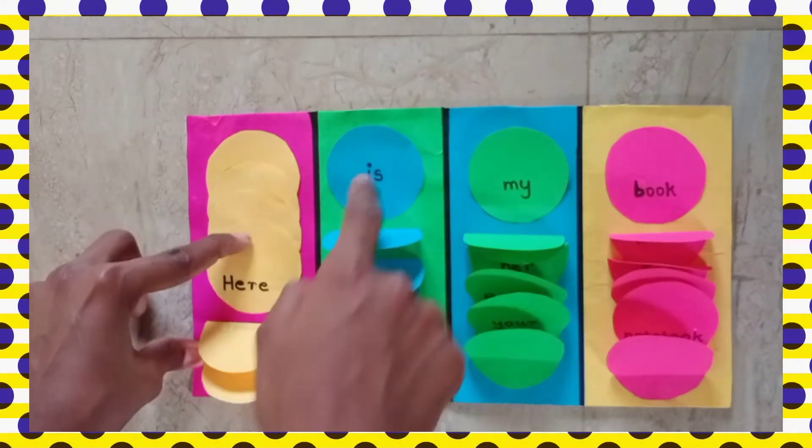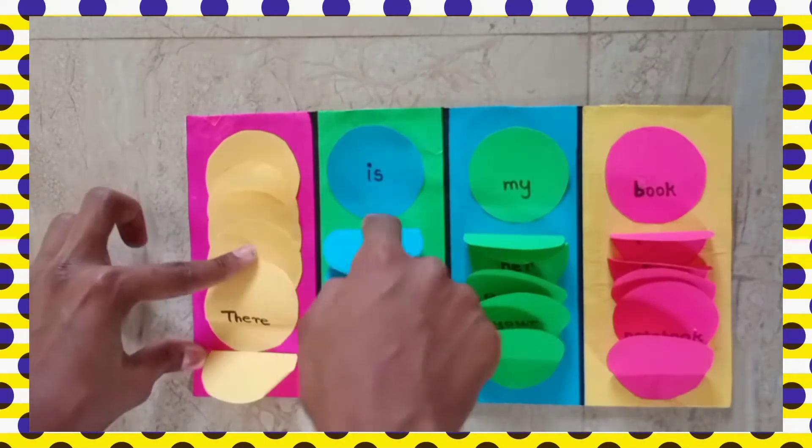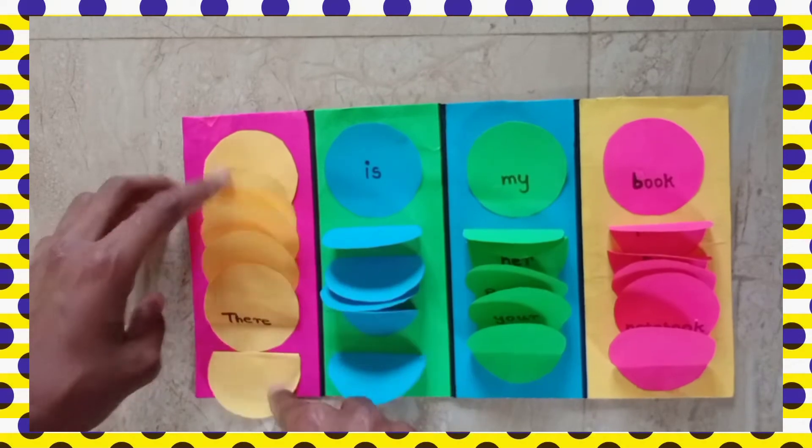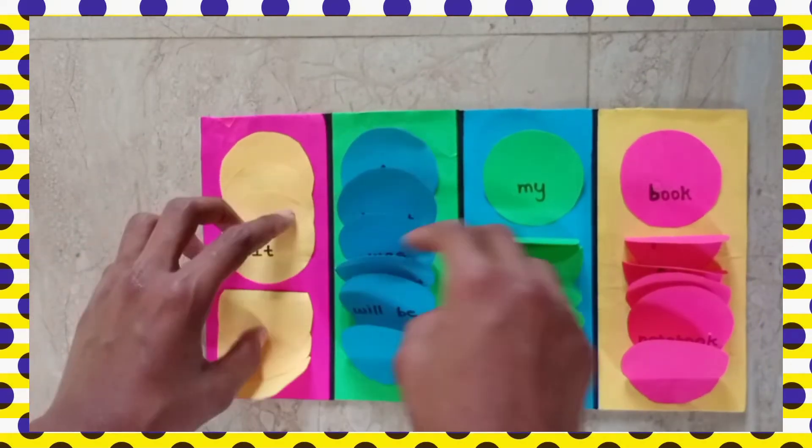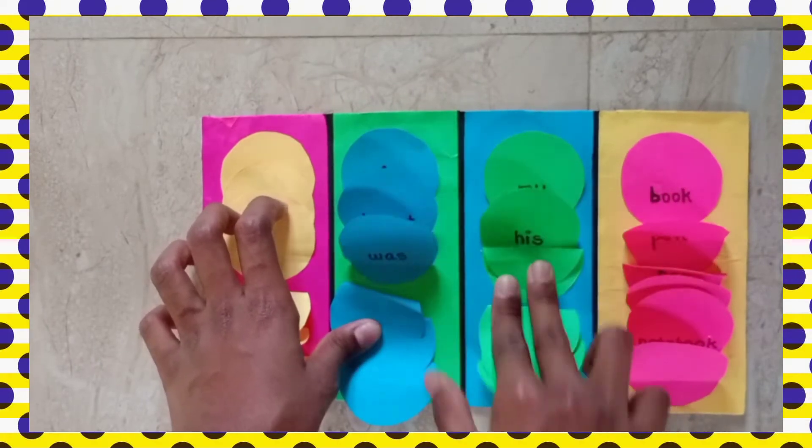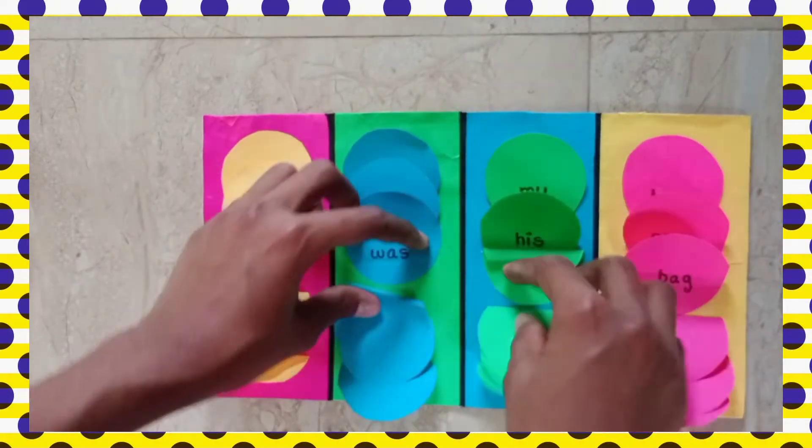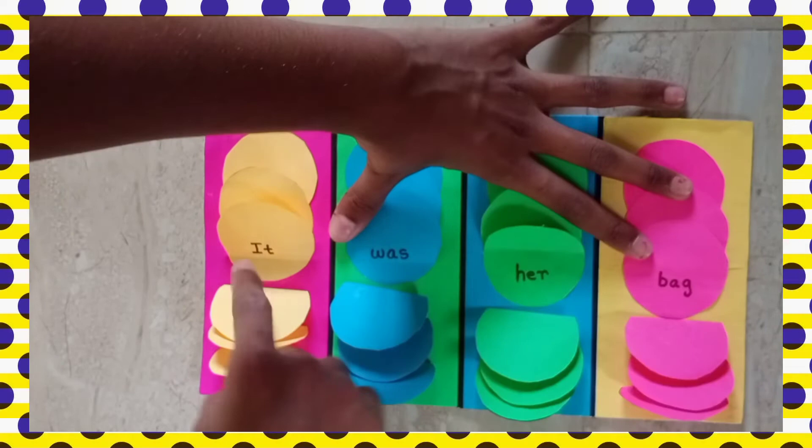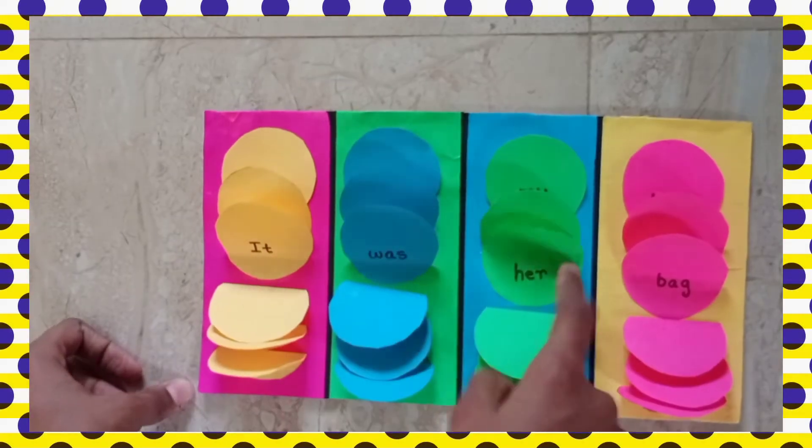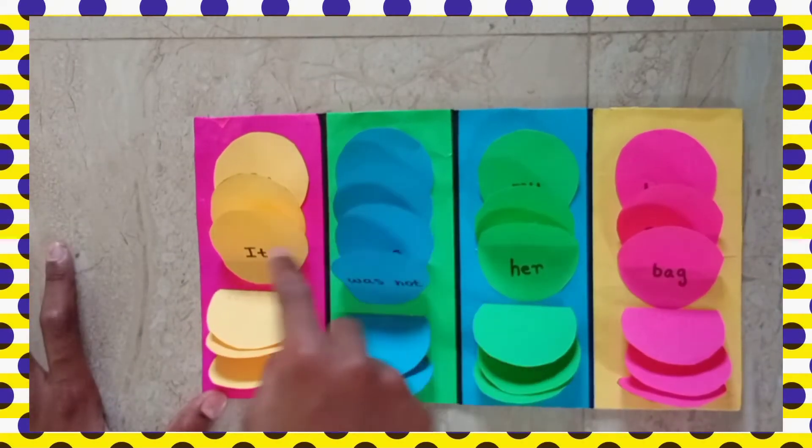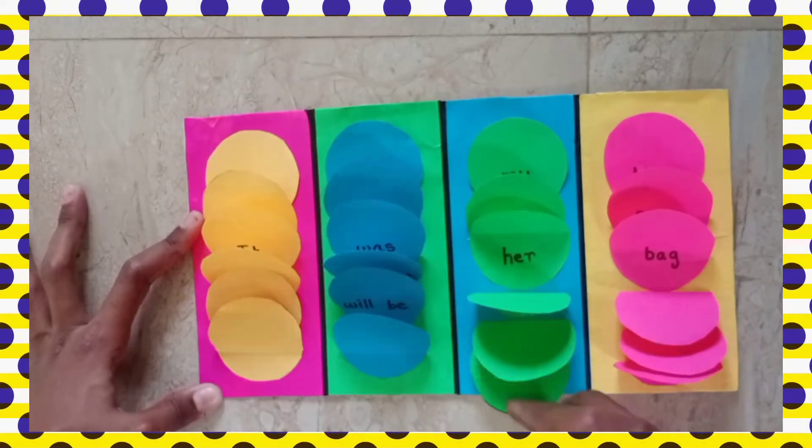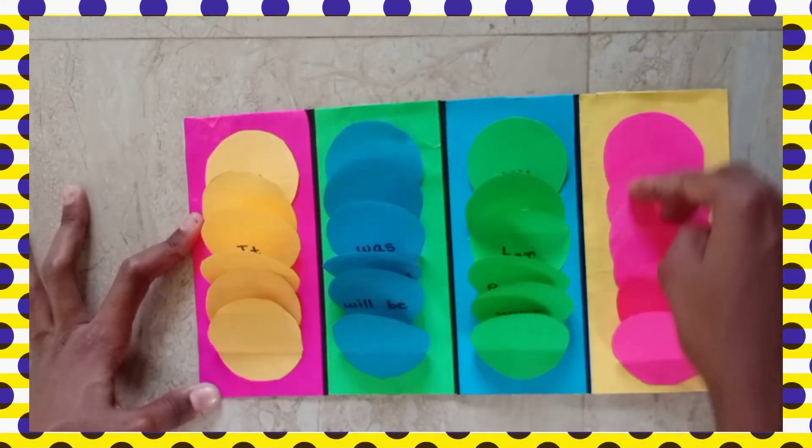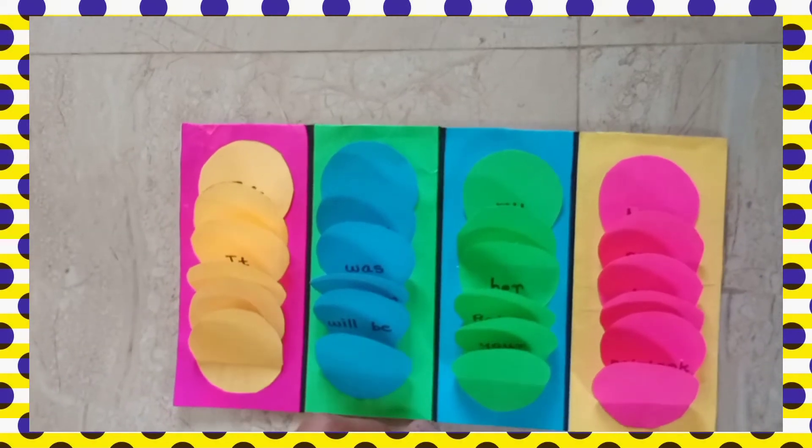It is my book. Here is my book. There is my book. Like this, if we change every word, it forms totally 625 words. Now let me choose randomly: It was her bag. If we choose randomly, a sentence is forming. It was not her bag.